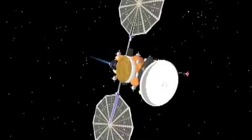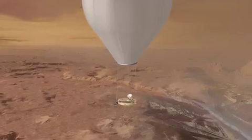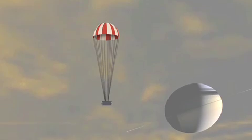The Titan Saturn System mission is a three-in-one mission with an orbiter for Titan, a balloon that will float through Titan's atmosphere, and a lander that will splash down on one of the northern lakes of Titan.